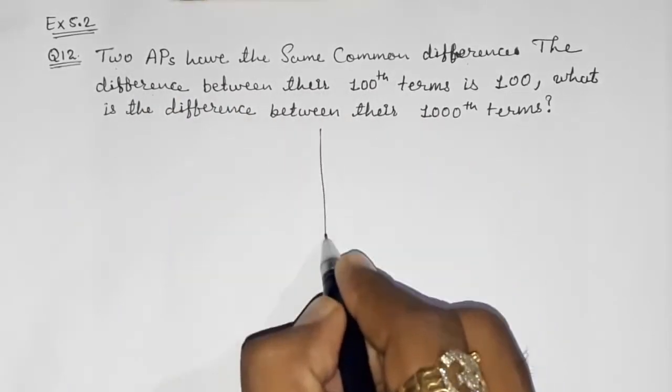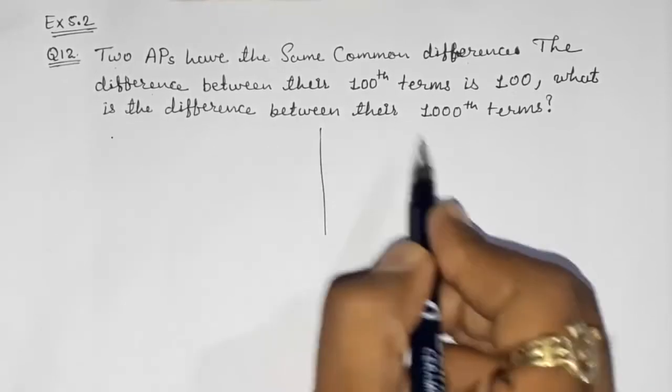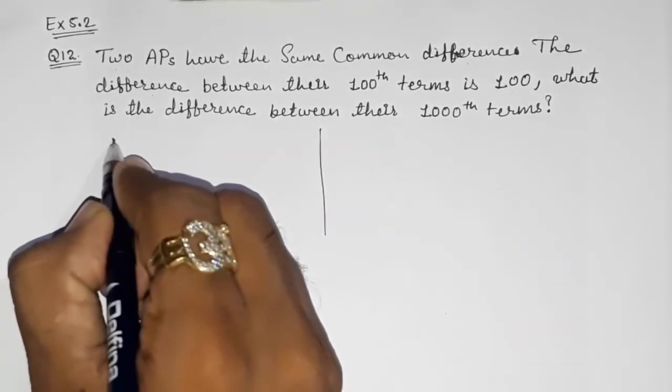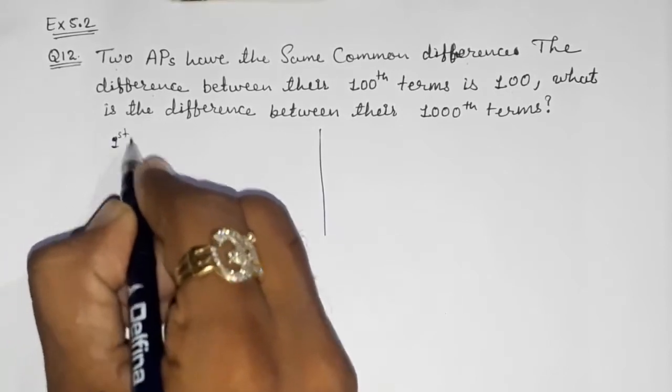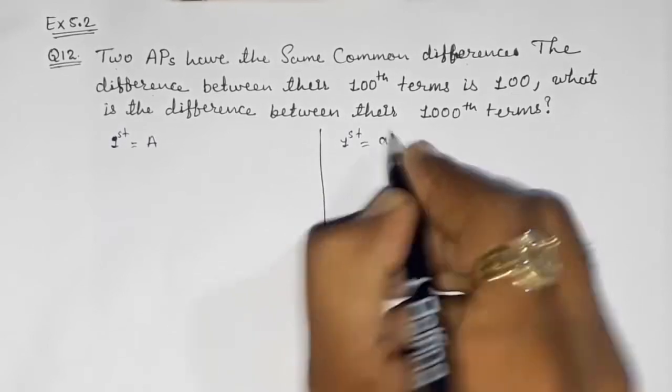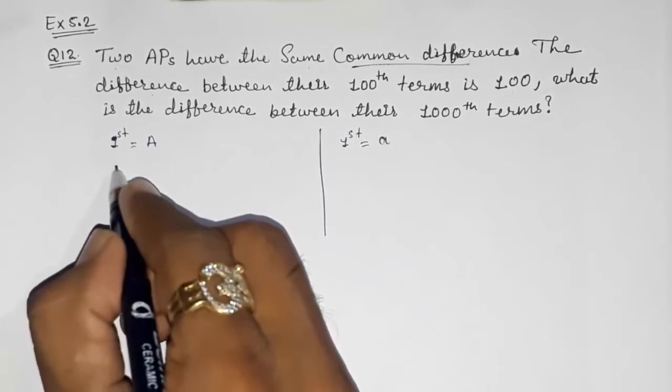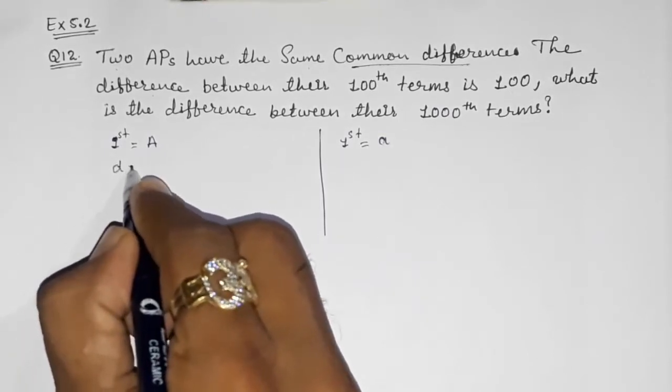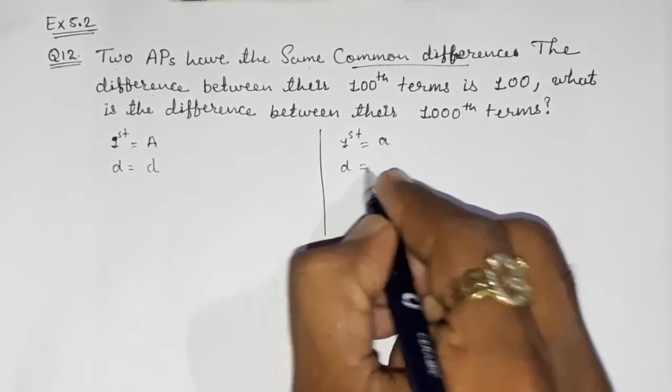They told two APs have the same common difference. I am making here a line so that I can make one AP on this side and one AP on this side. So here the first term I am taking as capital A, and here the first term as small a. Two APs are there having the same common difference, so d here and here also the difference will be d only.